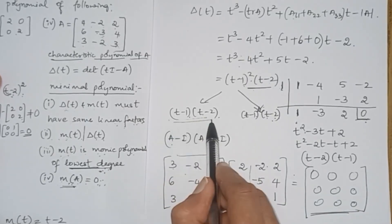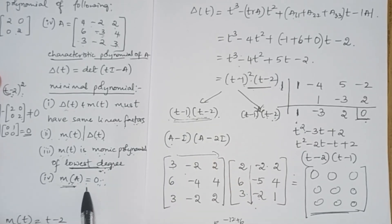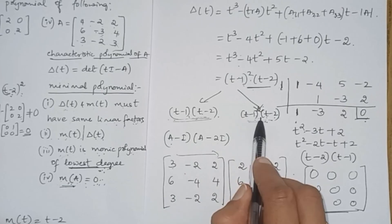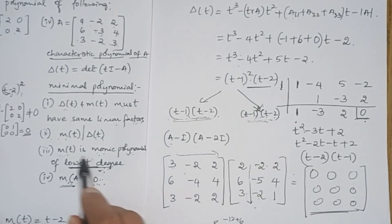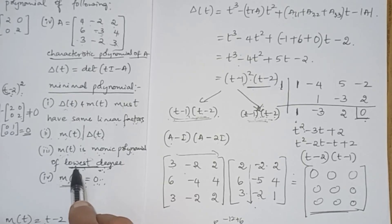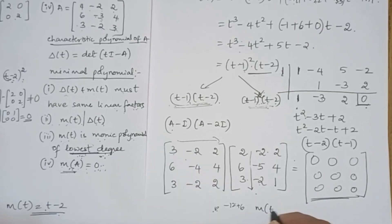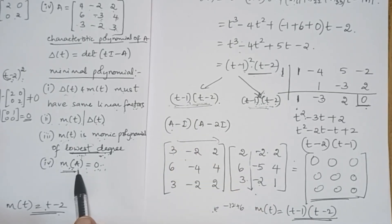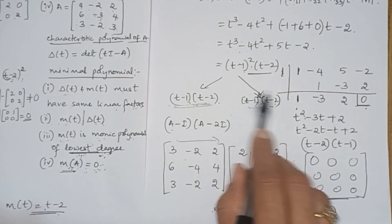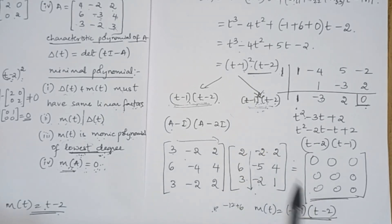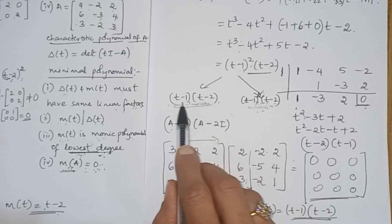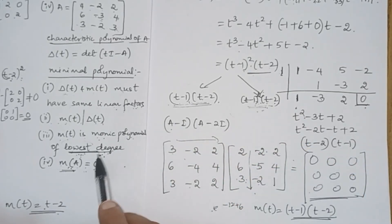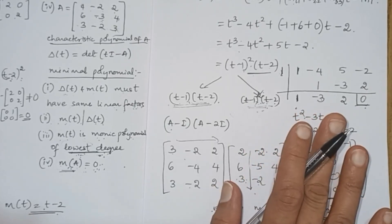Since (A minus I)(A minus 2I) = 0, the polynomial (T minus 1)(T minus 2) satisfies M(A) = 0. If it is satisfied for this polynomial, it will also be satisfied for (T minus 1)²(T minus 2). Now the lowest degree condition plays the important role — we choose the polynomial of lowest degree. Therefore M(T) = (T minus 1)(T minus 2). Remember these four conditions and verify accordingly to find the exact minimal polynomial for any given matrix A.